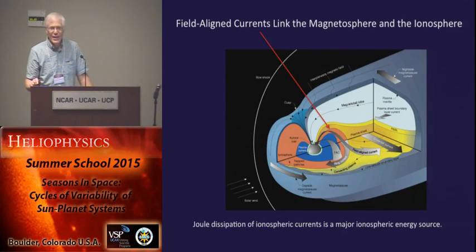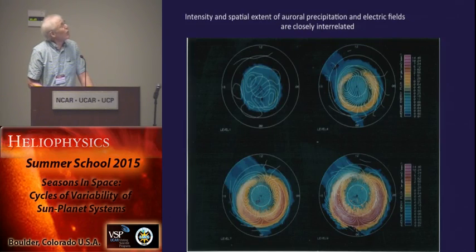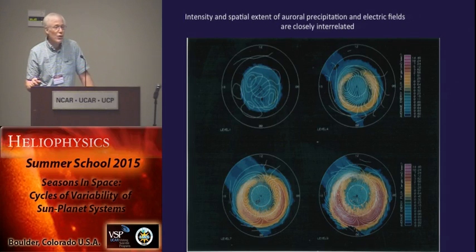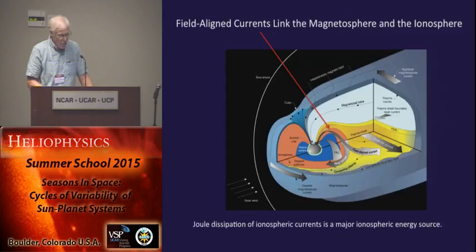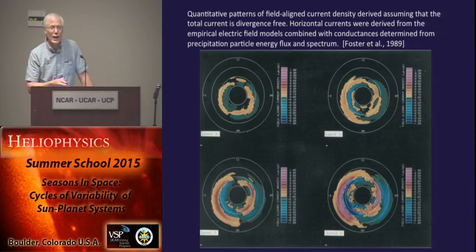Field-aligned currents couple the magnetosphere down to the ionosphere. In those maps you have ways of computing field-aligned currents. You have particle precipitation giving you conductance, electric fields and gradients in the electric fields. Gradients in currents then give you field-aligned currents.